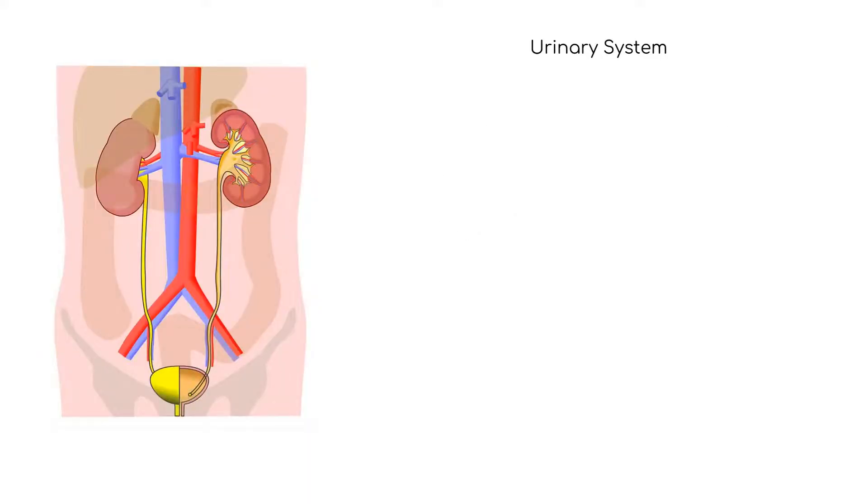The urinary system includes the kidneys, ureter, urinary bladder, and urethra. The function of the urinary system is to remove wastes, maintain water and electrolyte balance, and store and transport urine.